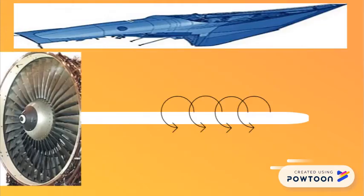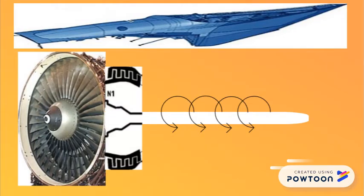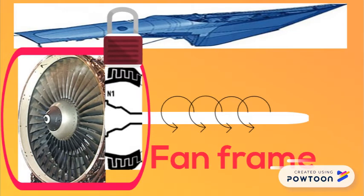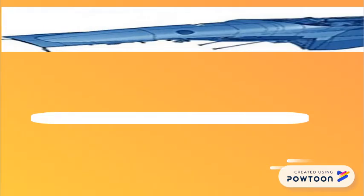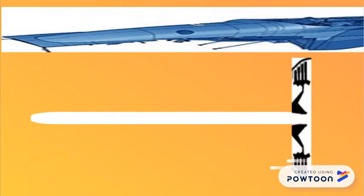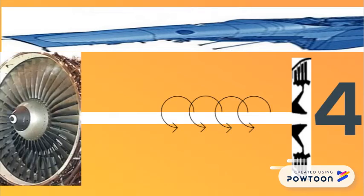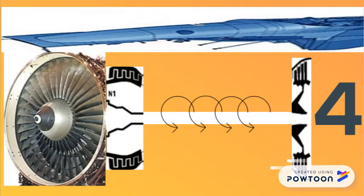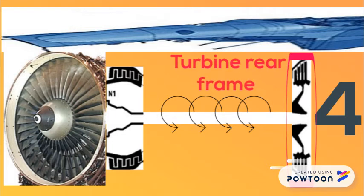The fan and low-pressure compressor are supported by the fan frame, which is also the location for the forward engine mount. The low-pressure turbine is a four-stage turbine that drives the forward fan and the booster compressor. It is supported by the turbine rear frame, which is also the location for the rear engine mount.